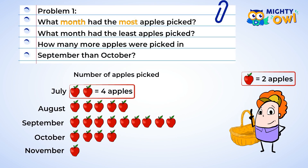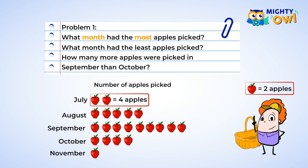What month had the most apples picked? We can look to see which month has the largest number of apples listed next to it, and that would be September. Now we can find which month had the least number of apples picked by finding the smallest number of apples. It looks like November has the least amount of apples.